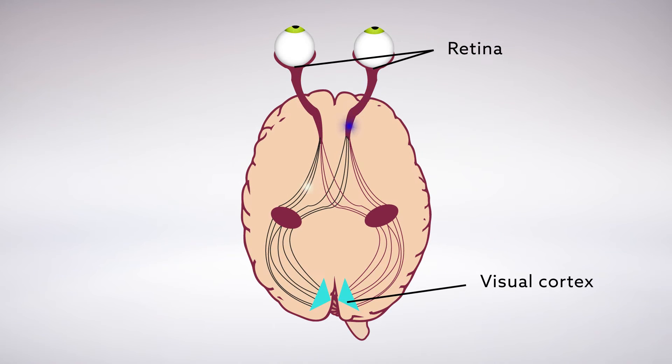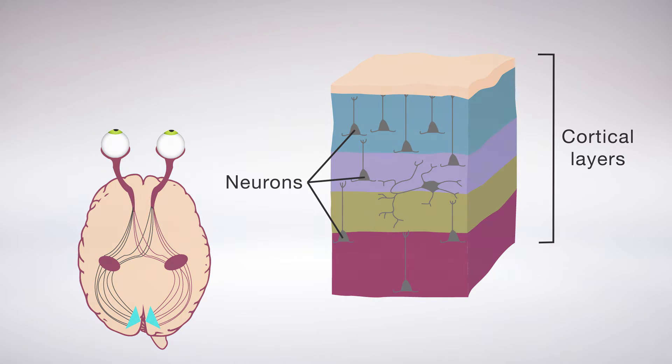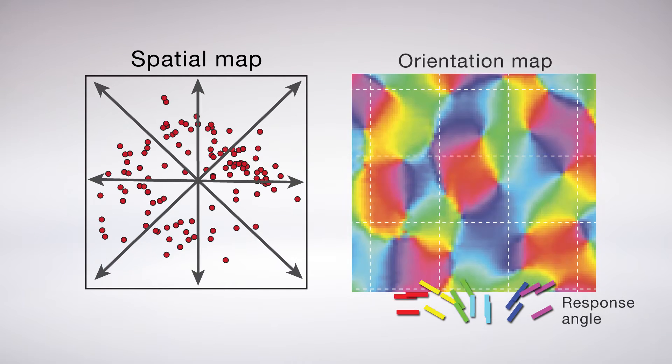Scientists know a lot about how the retina first picks up visual information and how that information is carried to other parts of the brain, namely to the visual cortex. It's there that thin layers of neurons create two equally important maps: spatial location and orientation.